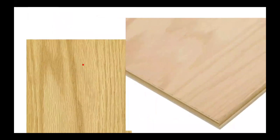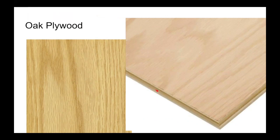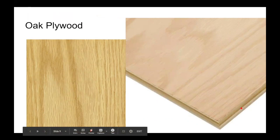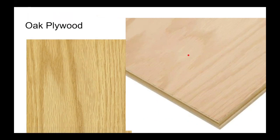The next piece has the same grain and look as the solid oak, but if we look down here, we can see nice uniform plywood layers. We need to be able to identify the difference between solid oak and oak plywood. The grain patterns still show that pinkish or tan hue of oak, but the uniform layers on the edge confirm it's oak plywood.